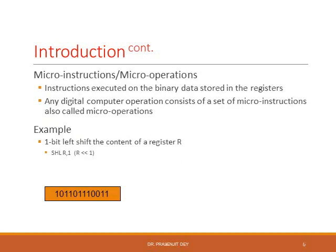What is a micro instruction or micro operation? Instructions executed on the binary data stored in the register. Any digital computer operation consists of a set of micro instructions, also called micro operations. Consider binary multiplication using Booth's algorithm — there we consider the last two bits of the multiplier register, and according to those bits, we add the multiplicand with the partial product or subtract the multiplicand from the partial product. After performing a set of micro operations, we finally get the multiplication result.